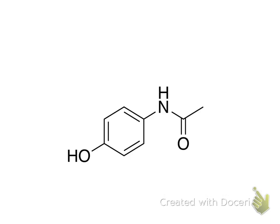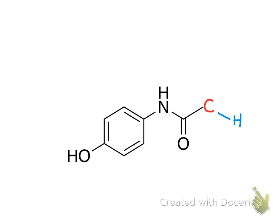We're going to look at acetaminophen and figure out the hybridized orbitals around a number of different atoms. Starting with the carbon on the end — this point represents a carbon, and by the rules of skeletal structures we can assume its valence is satisfied with three hydrogens coming off of it. This carbon has four single bonds, giving it four electron domains.